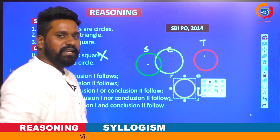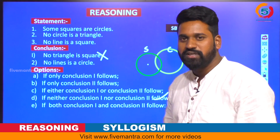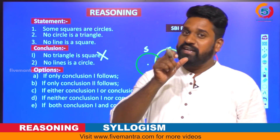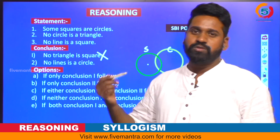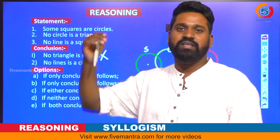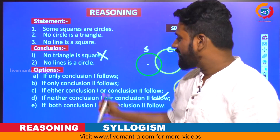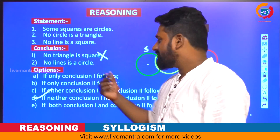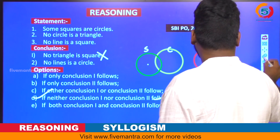So the first conclusion is wrong and the second conclusion is also wrong. If you observe the previous question (2015) and this question (2014), the shifts are different and the conclusions are different, but both give the same answer — the fourth option. So the fourth option is the answer for both questions.